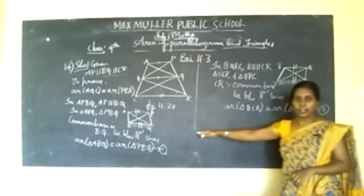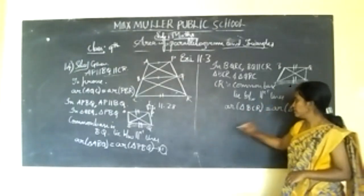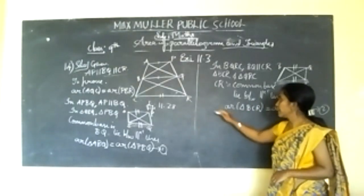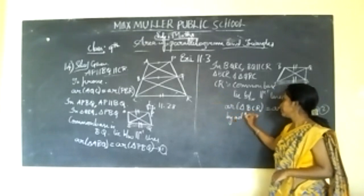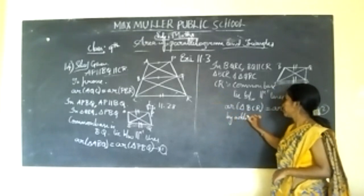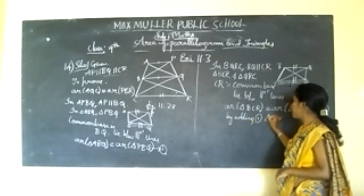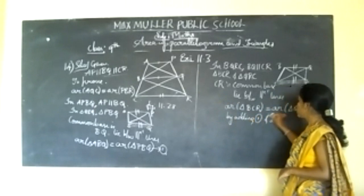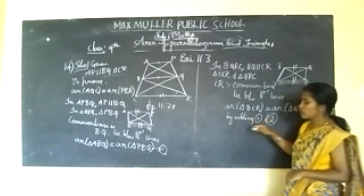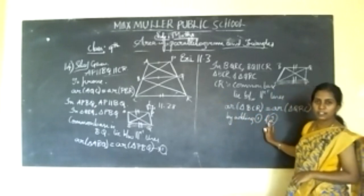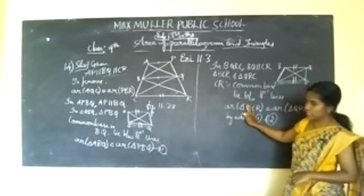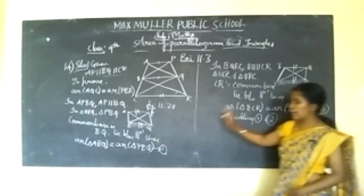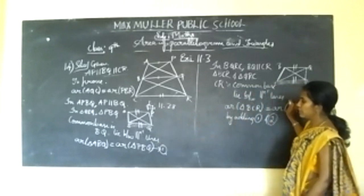By adding equations 1 and 2, you can get the solution. While adding, you have to add the LHS part with LHS part and the RHS part with RHS part.